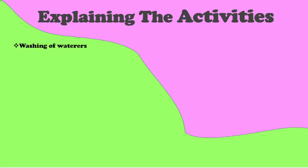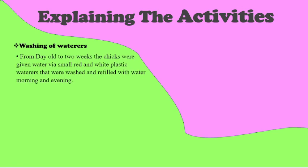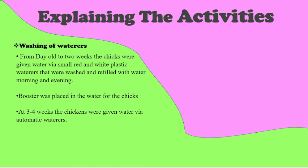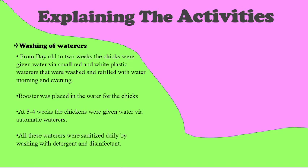Here is a sample of how you can explain your activity. For washing of waterers, you could write: from day-old to two weeks, the chicks were given water via small red and white plastic waterers that were washed and refilled morning and evening. Indicate that booster was placed in the water and state the amount used. Also indicate that automatic waterers were introduced at the end of two weeks, and that all waterers were sanitized daily by washing with detergent and disinfectant. You can also include pictures of washing and sanitizing.